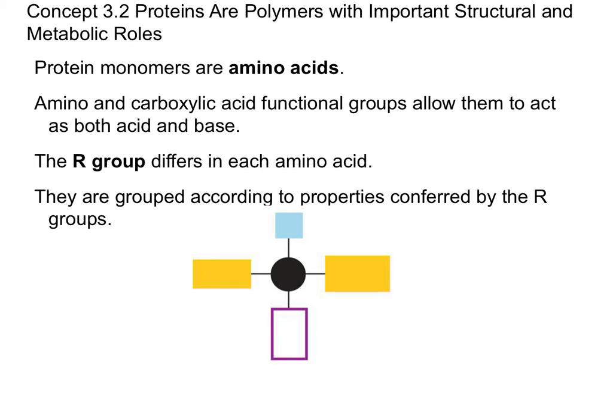Now I want to talk a little bit about the structure of proteins, starting with the structure of a monomer of a protein, which is an amino acid. Proteins are made up of a bunch of amino acids linked together, and there are several different amino acids to choose from. These amino acids are made up of five main things, starting with the central carbon. At the focal point of each amino acid, there is a single carbon that the rest of these groups are connected to.